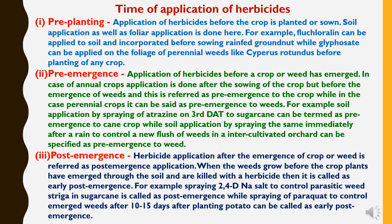The third is post-emergence — herbicide application after the emergence of a crop or weed. When weeds grow before the crop has emerged and are killed with a herbicide, it is called early post-emergence. Example: spraying 2,4-D NA salt to control parasitic weeds in sugarcane is post-emergence, while spraying paraquat to control emerged weeds 10–15 days after planting potatoes is early post-emergence.